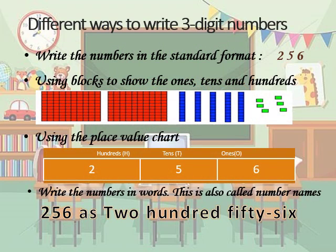Now we will understand different ways to write a three digit number. Let us take the number 256. First, in standard format that is 256. Second, using blocks to show the ones, tens, and hundreds — here 2 blocks of 100, 5 blocks of tens, and 6 blocks of ones. It can also be written using a place value chart as shown.